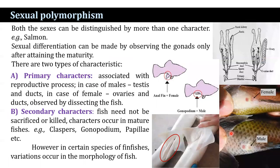What is sexual polymorphism? Both sexes can be distinguished by more than one character. That is found in salmon. Sexual differentiation can be made by observing the gonads only after attaining maturity.